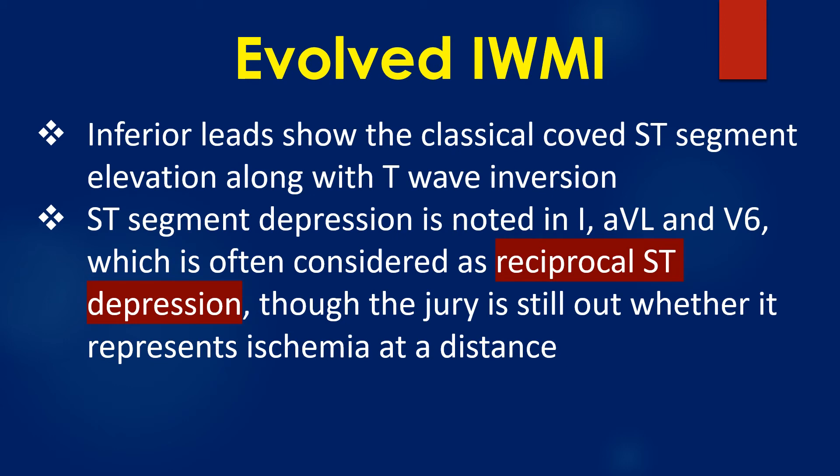Inferior leads show the classical coved ST segment elevation along with T wave inversion. ST segment depression is noted in leads I, AVL, and V6, which is often considered as reciprocal ST depression, though the jury is still out whether it represents ischemia at a distance.